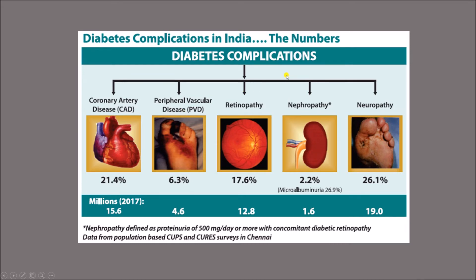Macrovascular complications include coronary artery diseases (CAD), peripheral vascular diseases (PVD), and stroke or cerebrovascular accidents. Data from a survey conducted in Chennai showed that the majority of patients have diabetic neuropathy, which can cause diabetic foot — either neurogenic or ischemic due to peripheral vascular disease. Coronary artery disease was found in 21.4% of patients, diabetic retinopathy in 17.6%, and diabetic nephropathy in about 2.2%.